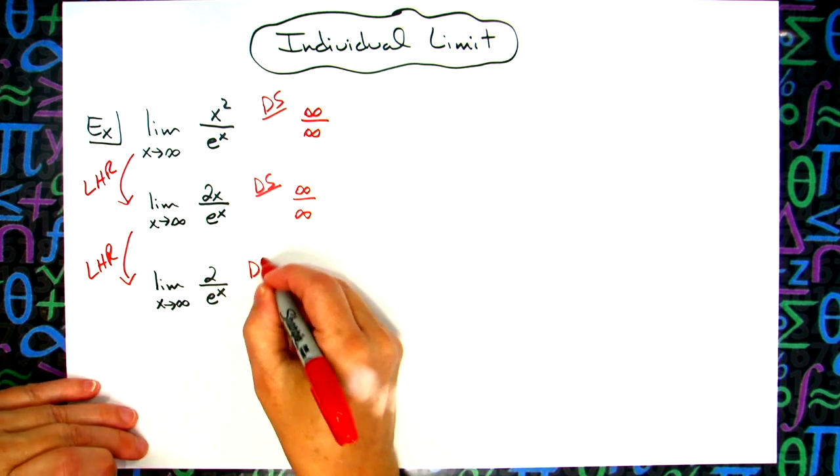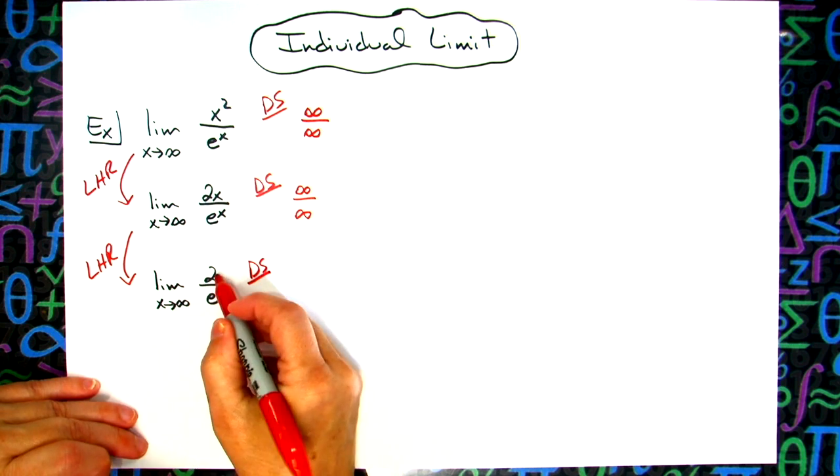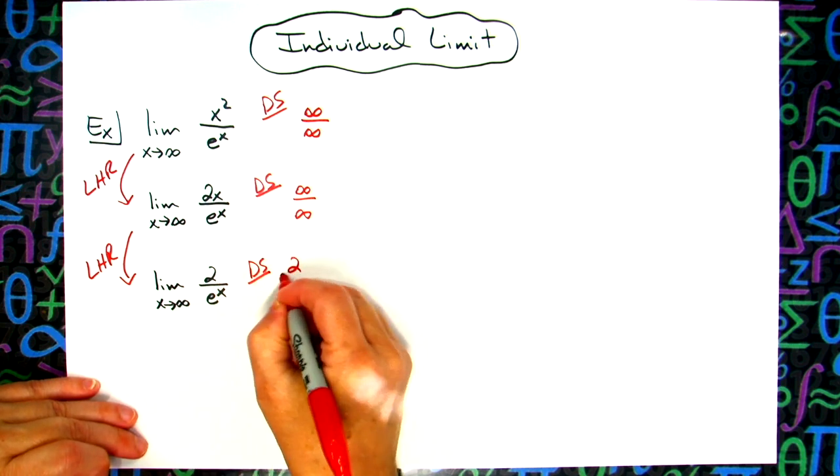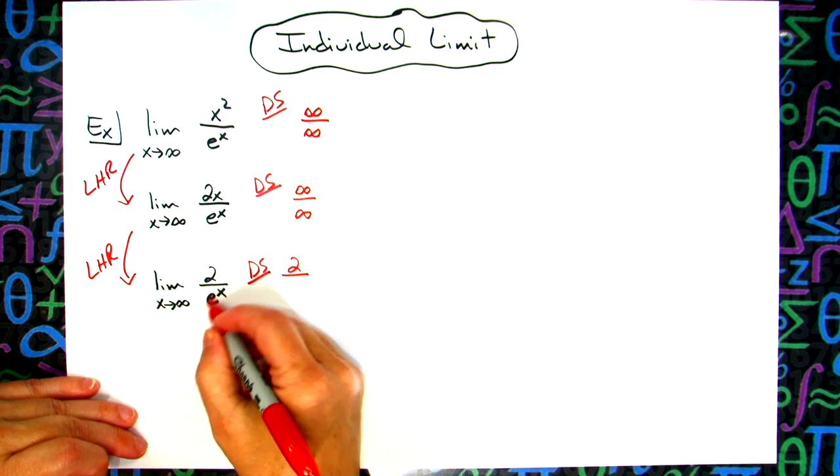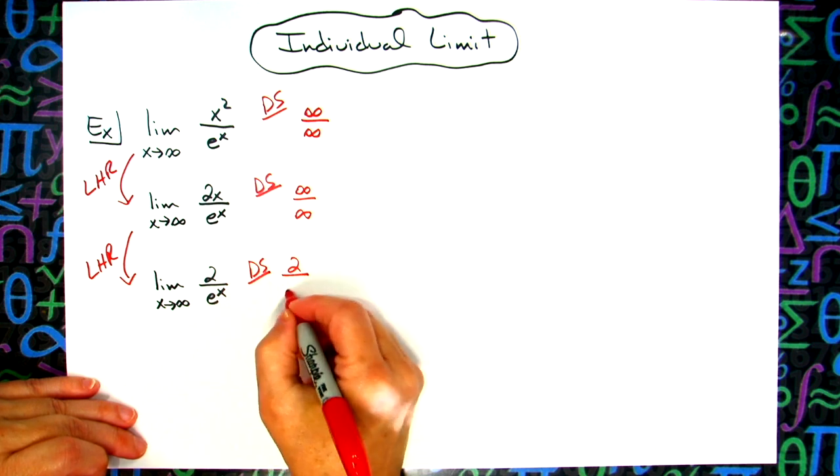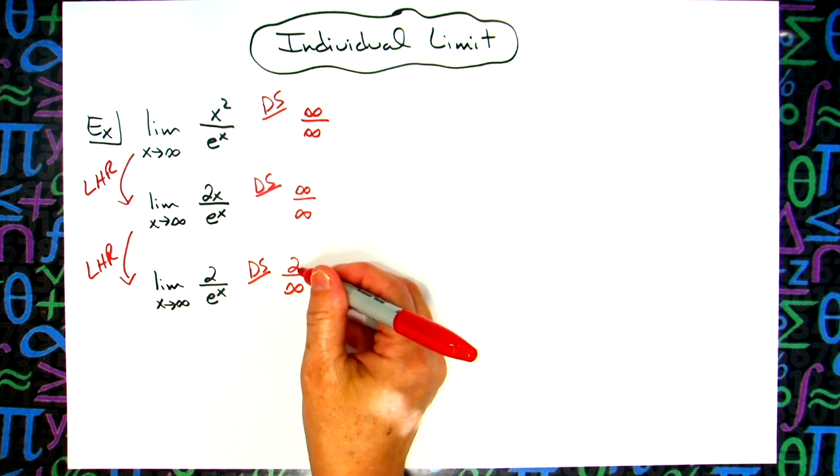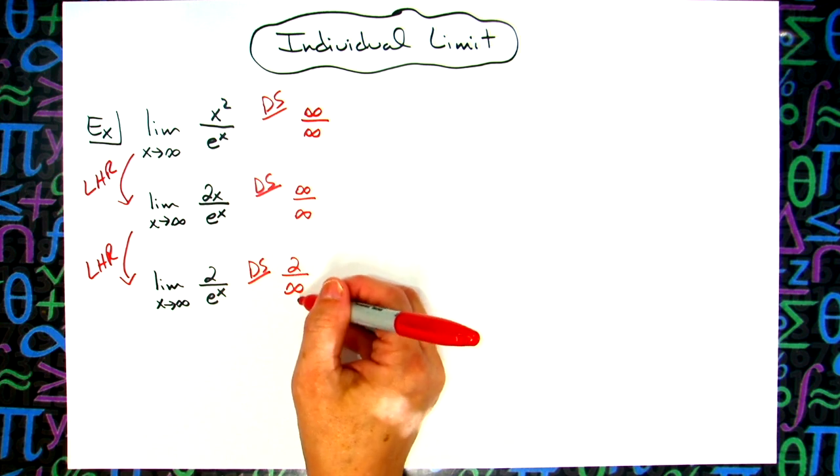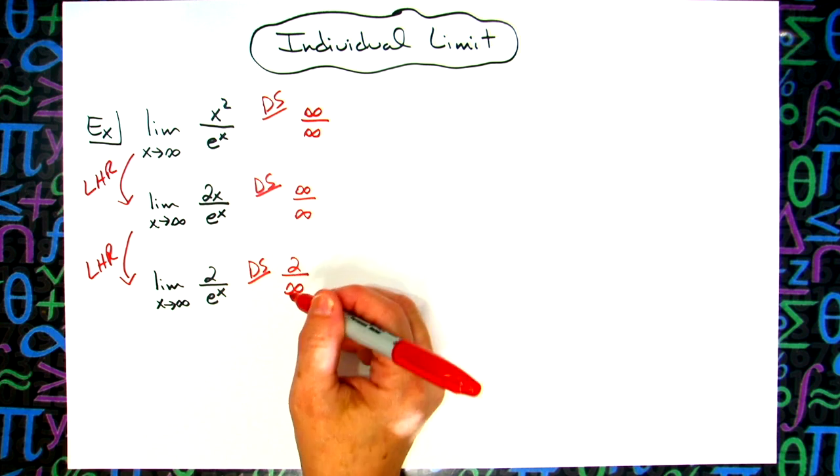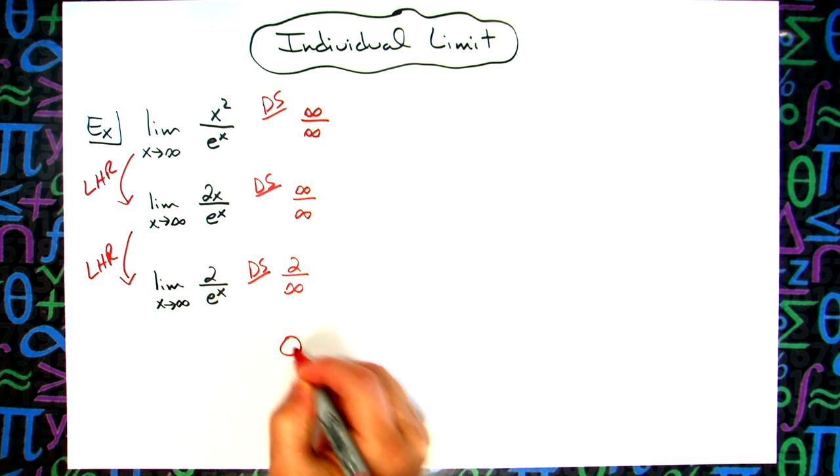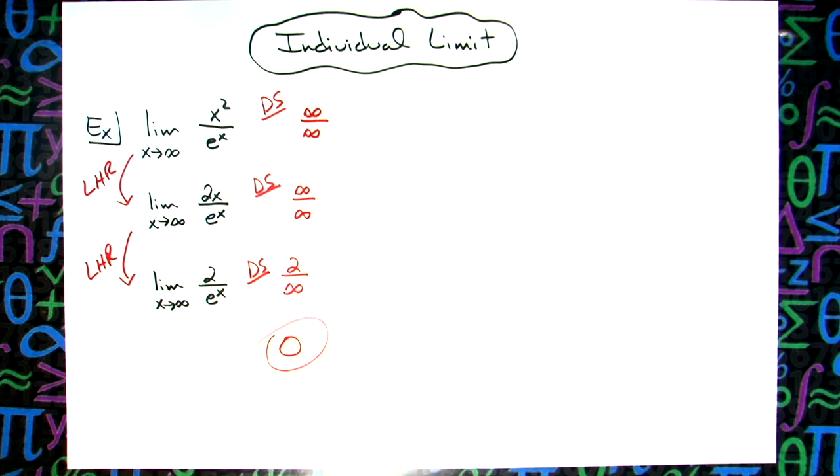Now attempting direct substitution - there's nothing to plug in on top, so it remains 2. Plugging in infinity means the bottom approaches infinity and gets infinitely large. When a fraction has a constant on top and the bottom gets larger and larger, it approaches 0. So this limit is 0.